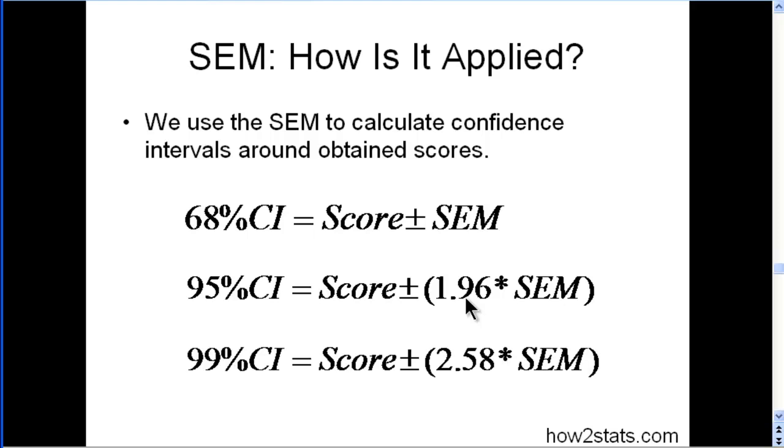And then 99% confidence interval. A score plus or minus 2.58 times standard error of measurement. So as you increase your confidence levels, as in you increase the range, you also have a corresponding larger Z value that you're multiplying the standard error of measurement. Now it might look like for the 68% confidence interval that you're not multiplying the standard error of measurement by something, but you are. You're multiplying it by 1.